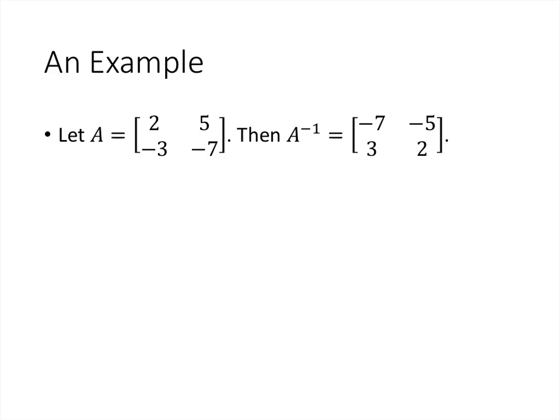For example, if we have the matrix A = [2, 5; -3, -7], then the inverse of A turns out to be [-7, -5; 3, 2]. We demonstrate this by multiplying A times A inverse, and also multiplying A inverse times A, making sure we get the identity matrix both times.